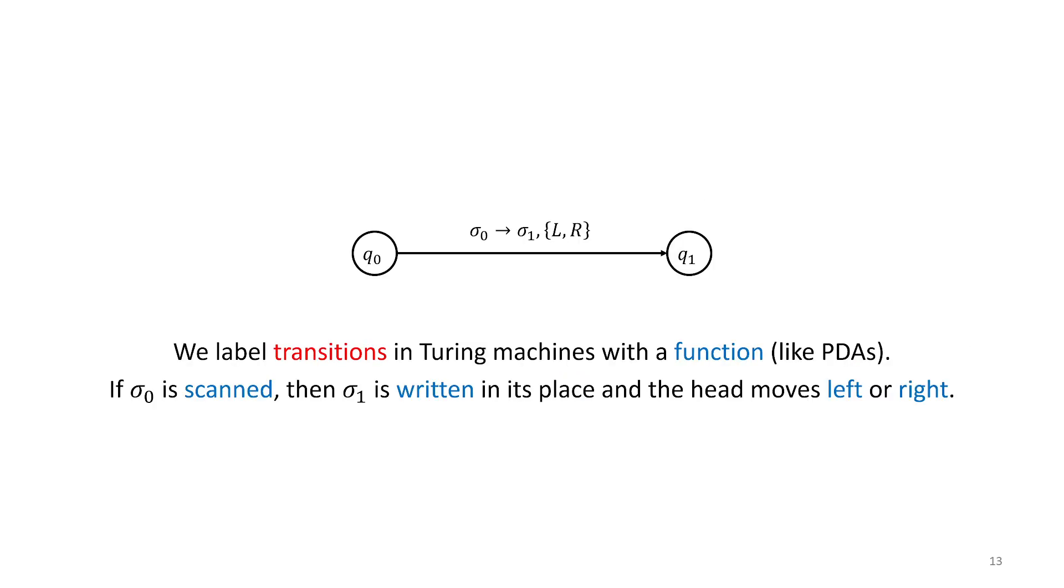We are going to draw state diagrams as we have for PDAs and NFAs and so on. And when we do that, we're going to label the transition with a very special sort of functional label. Once you get used to reading them and working with them, it's easy to understand what they're doing. We've got the symbol that we're going to be reading in and then the symbol that we might overwrite it with, and then our instructions on what we're going to do with the tape head. Are we going to move it left or are we going to move it right?